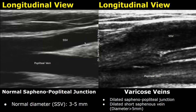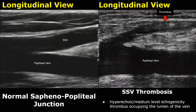In the case of varicose veins, the saphenopopliteal junction may be dilated, and the short saphenous vein can also be dilated. Here is a case of short saphenous vein thrombosis. A thrombosis will be seen as a hyperechoic or medium-level echogenicity structure occupying the lumen of the vein.